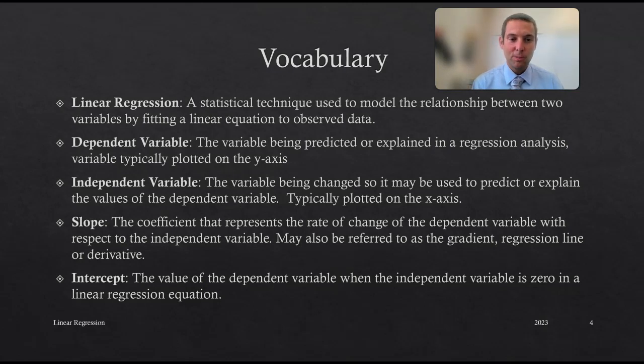We have our slope, which is the coefficient that represents the rate of change of the dependent variable with respect to the independent variable. It can also be referred to as the gradient, regression line, or derivative.